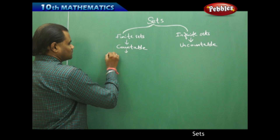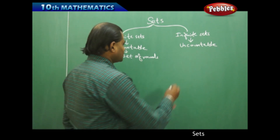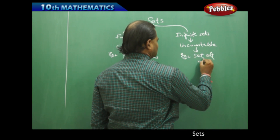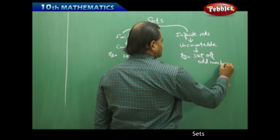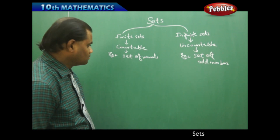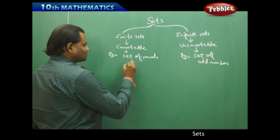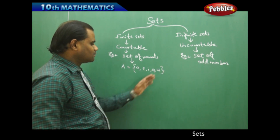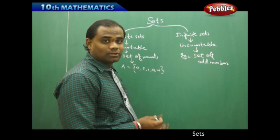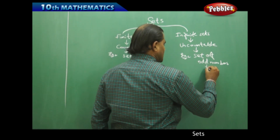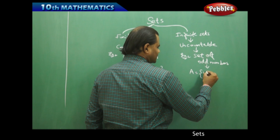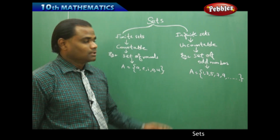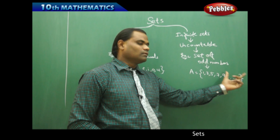For example, I take the set of vowels as a finite example, and the set of odd numbers as an infinite example. The set of vowels is countable — five elements. But the set of odd numbers — 1, 3, 5, 7, 9, and so on — cannot be counted because there are infinitely many odd numbers starting from one and going to infinity.